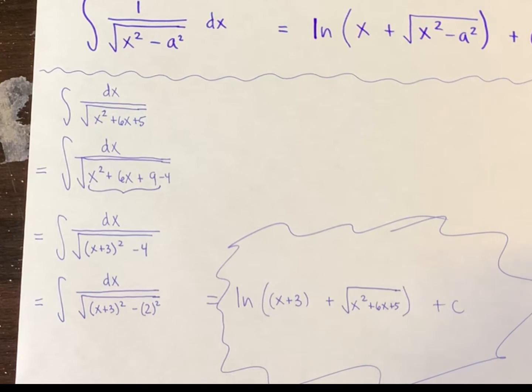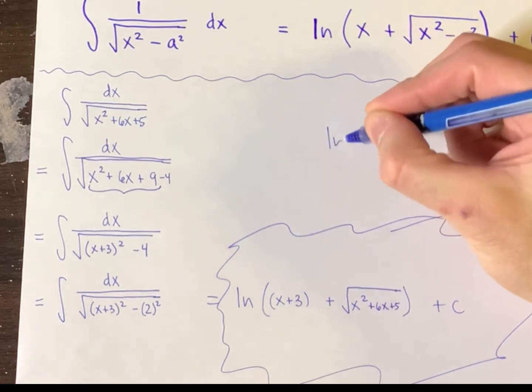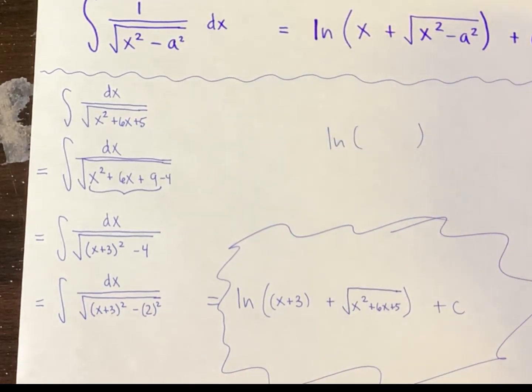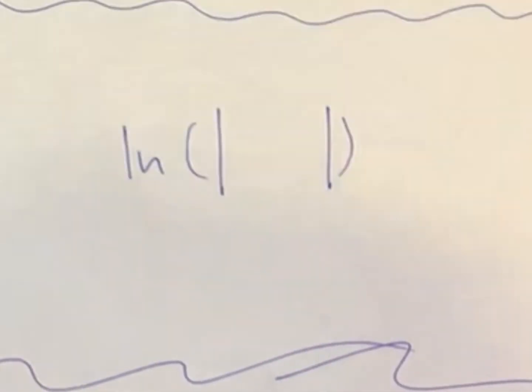Let me just say one more thing. A lot of times, these natural logs, very often it is the case that they have an absolute value inside of the parentheses surrounding the quantity inside. So that's somewhat of a technicality.